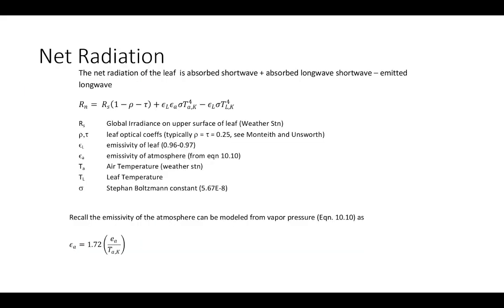Net radiation for a leaf is modeled as absorbed shortwave plus absorbed longwave minus emitted longwave. For a leaf, radiation is partly absorbed, partly reflected, and partly transmitted, so instead of an albedo we use one minus reflectance minus transmittance. Multiplying global irradiance by that term gives absorbed shortwave. Absorbed and emitted longwave are modeled using the Stefan-Boltzmann equation, and we must also model sky emissivity for a leaf exposed to the atmosphere.